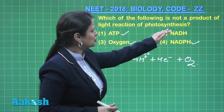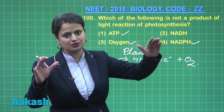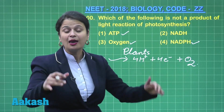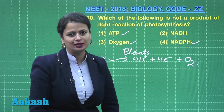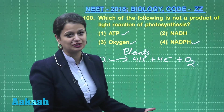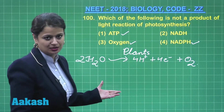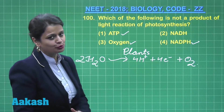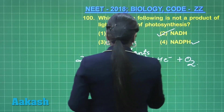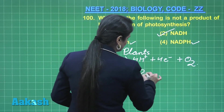NADH is produced in the light reaction, but keep in mind it is not produced in plants. It is produced in bacteria like green sulphur bacteria and purple sulphur bacteria. So NADH is not associated with eukaryotic photosynthesis, making it the right answer — option number 2.